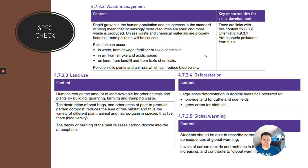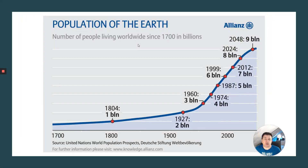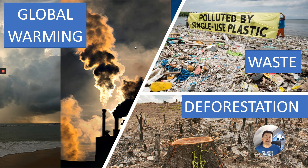With more humans on the planet, if we look at a graph of Earth's population, you can see populations have increased quite dramatically over the last 100 to 200 years and are continuing to increase. This is having an effect on the environment because more resources are required, leading to pollution and issues related to waste, deforestation, and global warming.